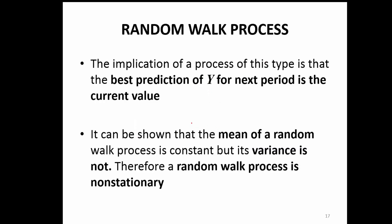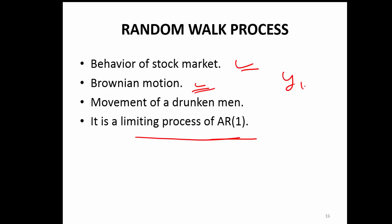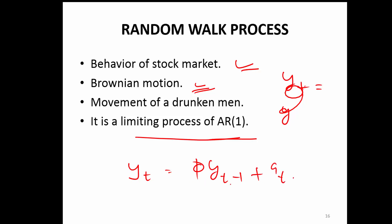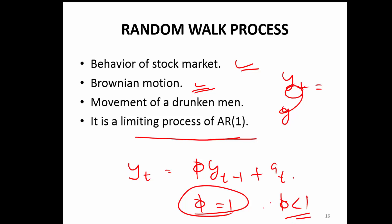An AR(1) process is yt equal to phi times y(t-1) plus at. So when phi equals 1, you get the random walk process. If phi is less than 1, you have the AR(1). Random walk is basically the special case of AR(1) where you cannot go ahead in building a forecasting model.